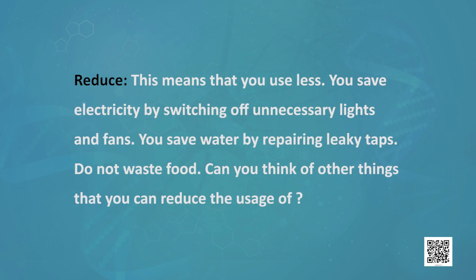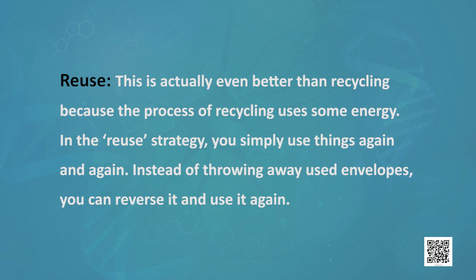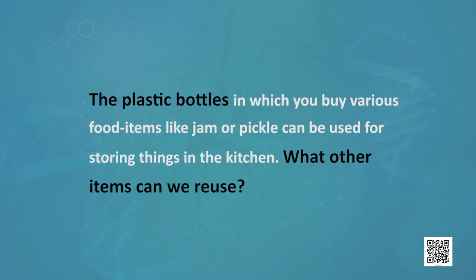Reduce means that you use less. Save electricity by switching off unnecessary lights and fans. Save water by repairing leaky taps. Do not waste food. Next is Reuse — this is actually even better than recycling because recycling uses some energy. In the reuse strategy, you simply use things again and again. Instead of throwing away used envelopes, reverse them and use again. Plastic bottles in which you buy food items like jams and pickles can be used for storing things in the kitchen.